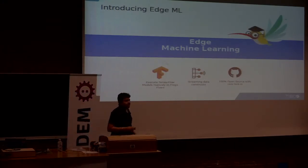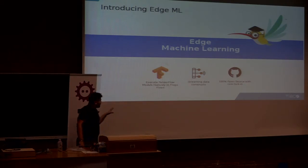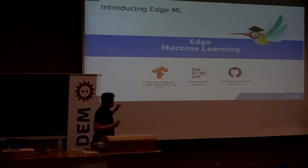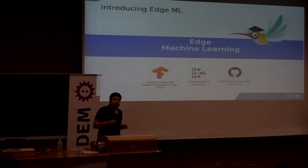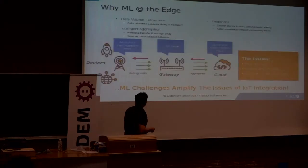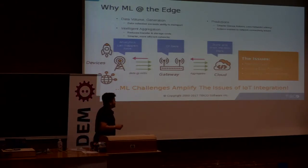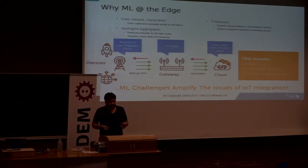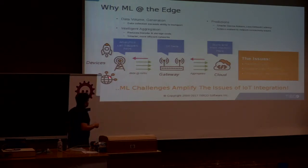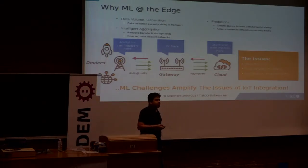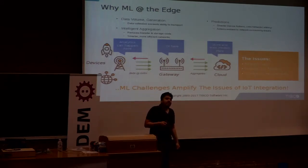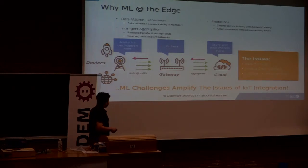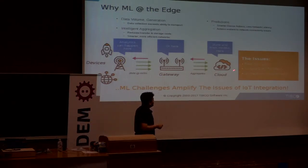Flogo also supports edge machine learning. By default, the framework can execute TensorFlow models through the flow itself. The app can collect and aggregate data and pass it to TensorFlow models for inference. Why do you need machine learning at the edge? With terabytes of data coming in, going to the cloud every time means prediction is no longer real-time. Running inference at the edge saves massive data transfer, and connectivity is no longer a hurdle — you can even inference when your device is offline. If you still need to store and train your models, you can go to the cloud for that.